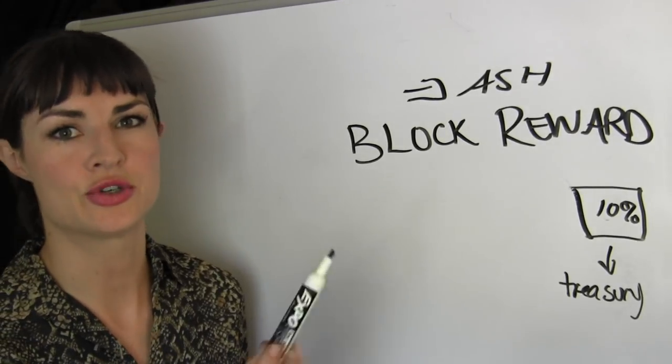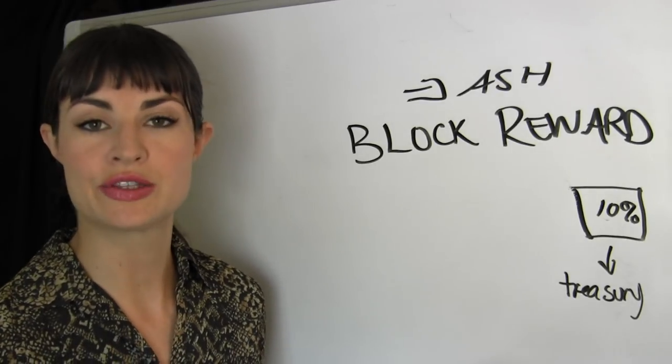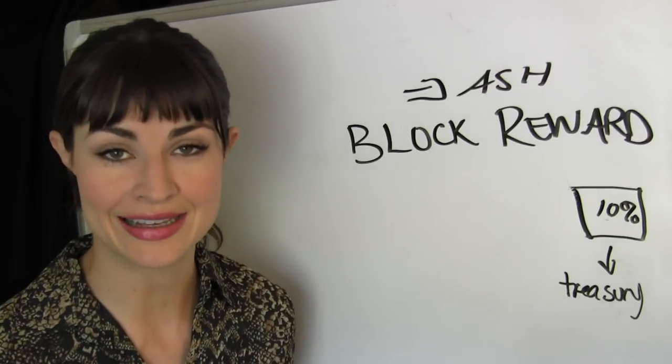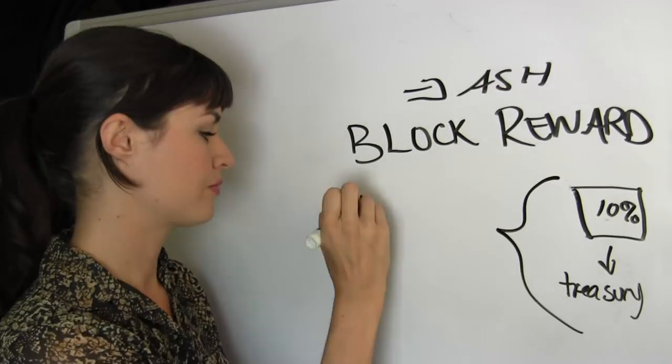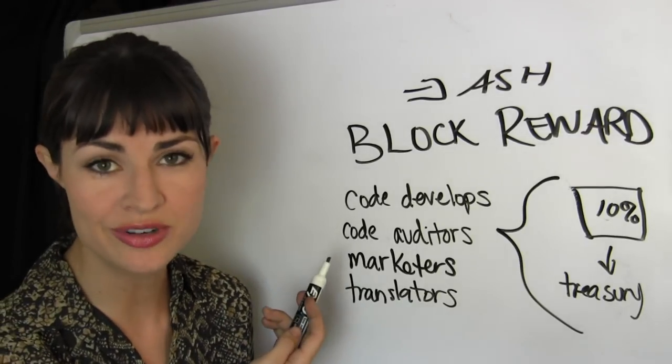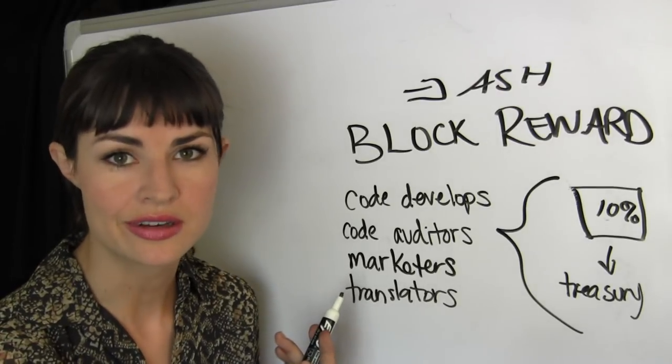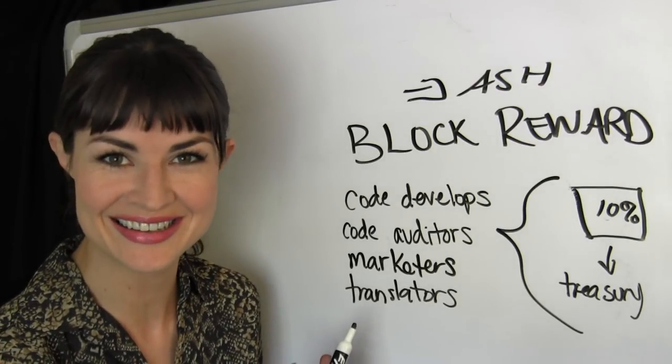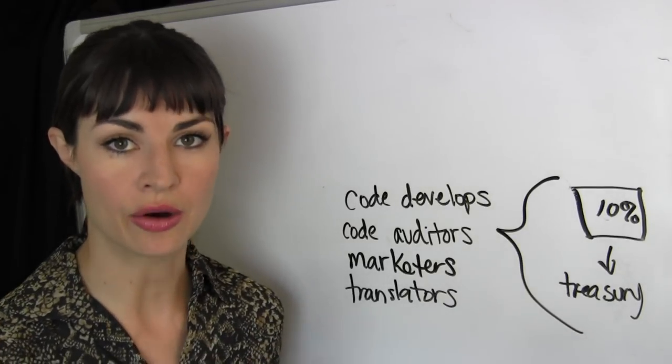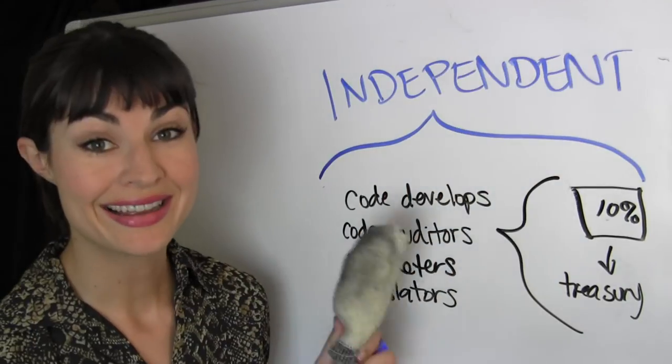And it is this treasury bit that allows us to fund everything that's required on the network in order to be a money as a service provider. I'm talking about the hiring of code developers, code auditors, marketers, and of course translators. And it is this treasury that enables our DAO, our decentralized autonomous organization, to be independent.